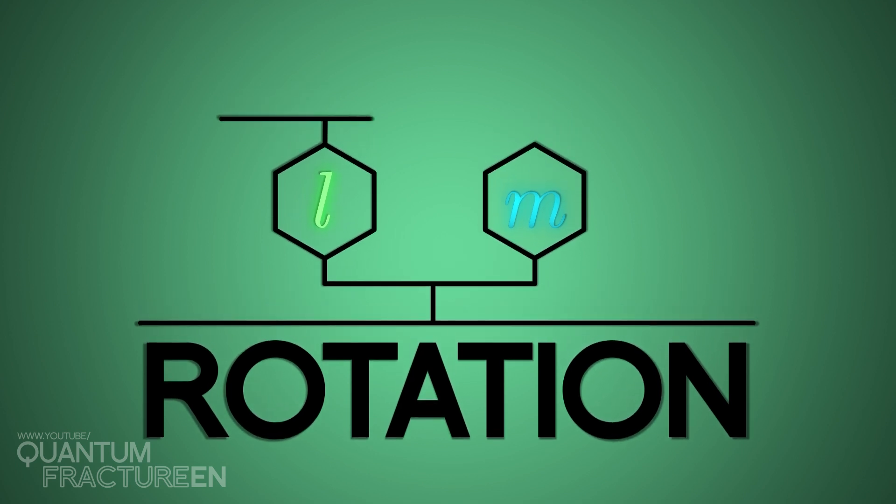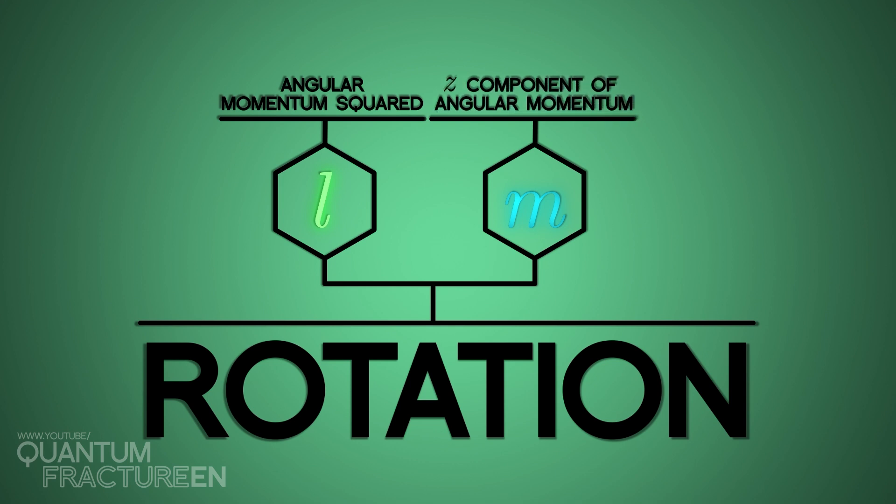The second number, L, expresses the amount of angular momentum the electron has. While the third, M, also indicates the amount of angular momentum, but in one of its Cartesian components.